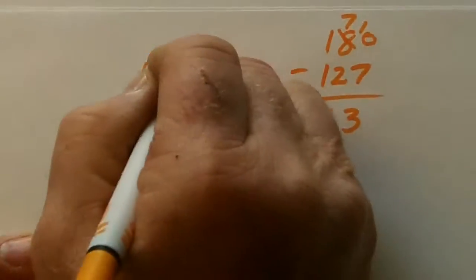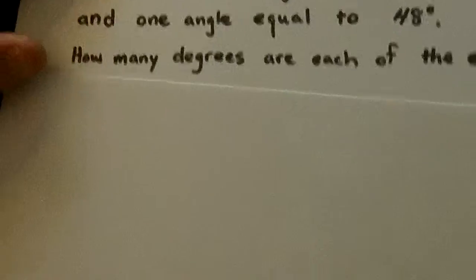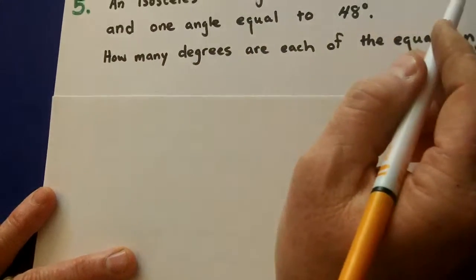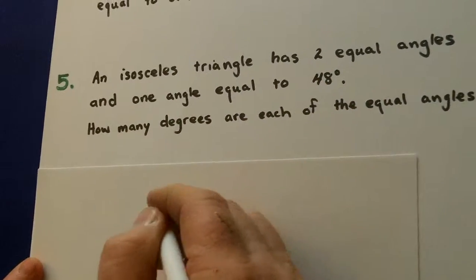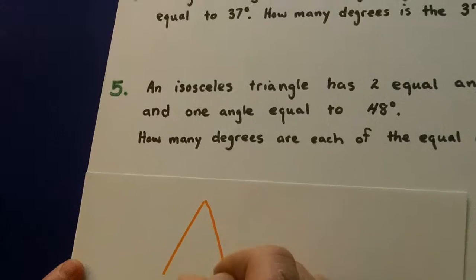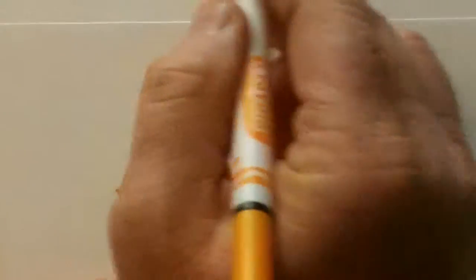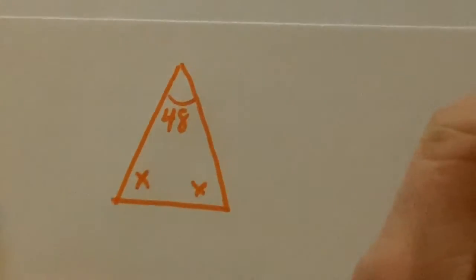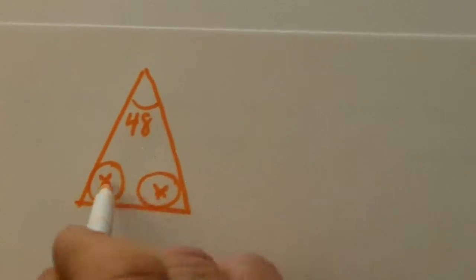Okay, let's go down here. An isosceles triangle has two equal angles and one angle equal to 48. So this angle up here is not very big, so maybe that is 48. Two equal angles. How many degrees are each of these?